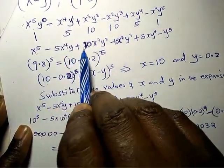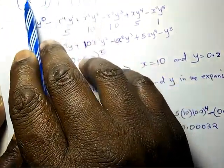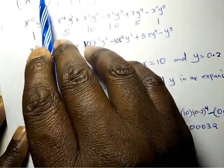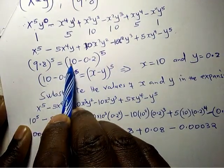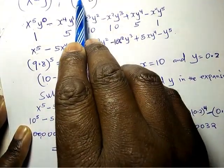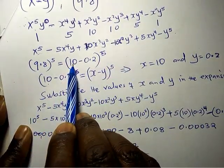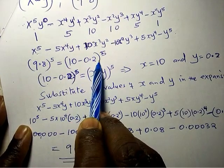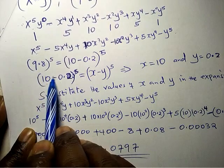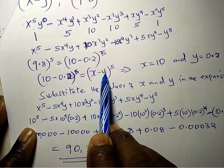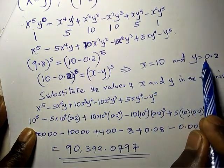Finally, we will have this expansion. So 9.8 - how else can you write 9.8 in these terms? It means it is 10 - 0.2, which gives us 9.8. So this is exactly (10 - 0.2)^5. Comparing: x is 10, y is 0.2.